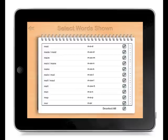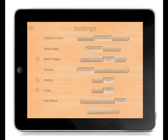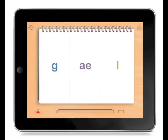Now let's see how those settings changes look. Here we'll see the flip book case is now different. The word is not appearing until we press the book icon. You can see the word case is now uppercase, as we set it to be.